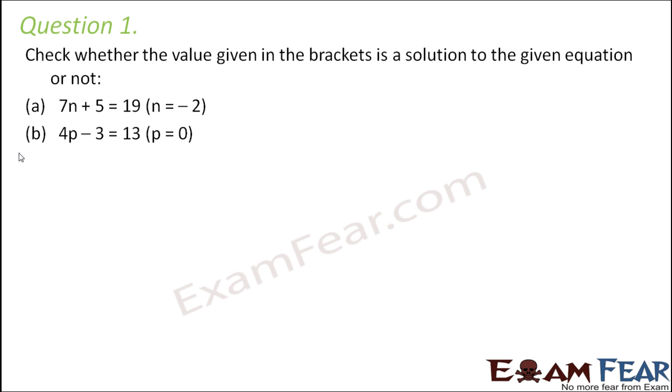Let us look at the first example. The first example is 7n plus 5 is equal to 19. A solution of this equation would be such a value of n for which LHS is equal to RHS. So that value of n for which whatever value you get from 7n plus 5 should be equal to 19. Only then that is called solution of this equation.